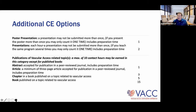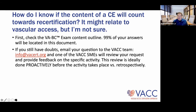Less commonly used categories: writing an abstract or publishing an article in a professional journal like JAVA earns 3 CE points. Writing a book chapter earns 5 points. Publishing a full book earns 15 points. As you can see, there are many ways to reach 30 credits over three years, and many of these options are available completely free online through accredited sources.